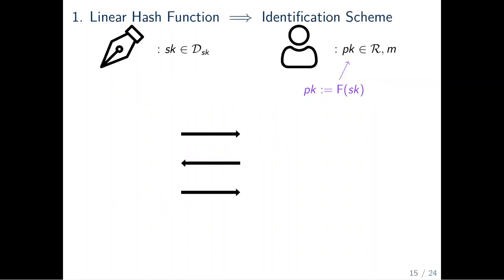The first transformation of our framework turns linear hash functions into linear identification schemes with correctness error. The keygen algorithm samples a secret key uniformly at random from its respective filter set and sets the public key to be F of sk. The signer starts by sampling R uniformly at random from its respective filter set.